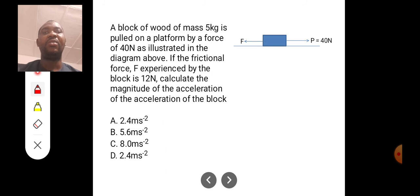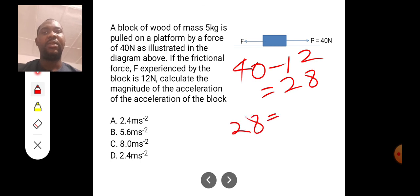Frictional force is always opposing motion. It is always moving in opposite direction. And since it is 12, we can simply say the resultant force is 40 minus 12. That will give us 28. So this 28 is equal to the product of mass and acceleration.